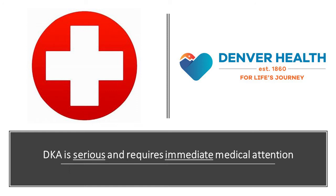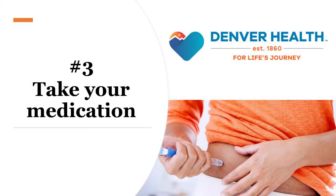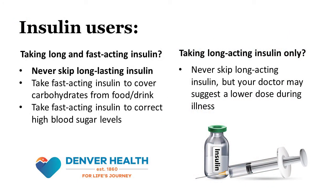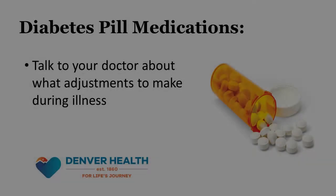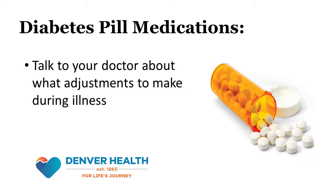DKA is a serious complication and requires immediate medical attention. So how can we prevent it from developing? 3. Keep taking your prescribed medications. DKA occurs from a lack of insulin, so people who are insulin dependent should never stop insulin during illness. If you're an insulin user, keep taking your long-acting insulin as prescribed, even if you're vomiting or can't eat. If you take both long and fast-acting insulin, you should continue to take fast-acting insulin as well to cover food and drinks that contain carbohydrates. You may also use it to correct a high blood sugar. If you're not sure how much fast-acting insulin to take to correct high blood sugar, call your doctor to discuss what to do. If you are only prescribed long-acting insulin and are concerned about low blood sugars, talk to your doctor to see if a reduced dose is recommended for you during illness. If you take any pill medications to manage your diabetes, talk to your doctor about what adjustments to make during illness.